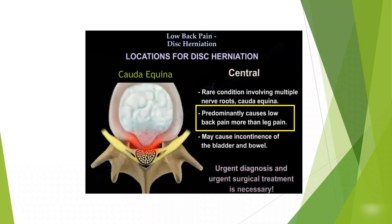How about a central disc herniation? In this case, you don't get a single nerve root affected — you get multiple nerve roots affected. Central disc herniation is rare and it causes cauda equina syndrome. Cauda equina is incontinence of the bladder and bowel in addition to low back pain — it is predominantly low back pain more than leg pain. This requires urgent MRI, urgent diagnosis, and urgent treatment. Every time you see a patient with low back pain, ask whether the patient has any bladder or bowel symptoms. It is an emergency if the patient has cauda equina syndrome.